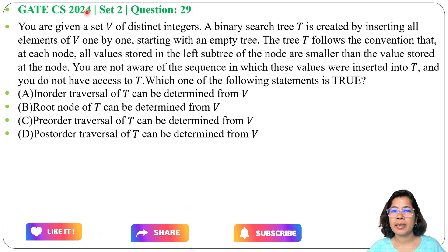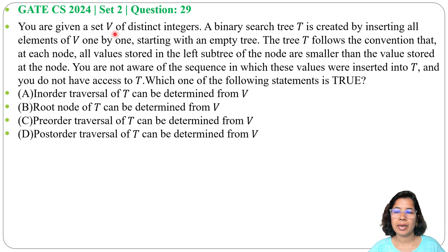Let's solve one previous question of binary search tree. This question was asked in GATE CS 2024 Set 2, Question Number 29. You are given a set V of distinct integers. A binary search tree T is created by inserting all elements of V one by one.